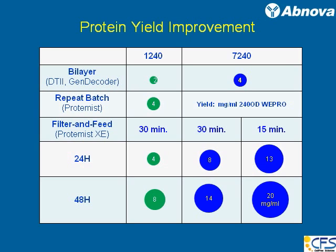Things are getting better. Running the filter-and-feed for 48 hours produces up to 8 mg per mL. Using high yield wheat germ extract with 30-minute translation buffer and mRNA replenishment also gives 8 mg. If you make the machine busier — replenishing mRNA and translation buffer every 15 minutes — production goes up to 13 mg. Running that for 48 hours, the machine produces 20 mg per mL of wheat germ extract. So a modest 2 mg per mL goes all the way to 20 mg per mL. That's what we have now.